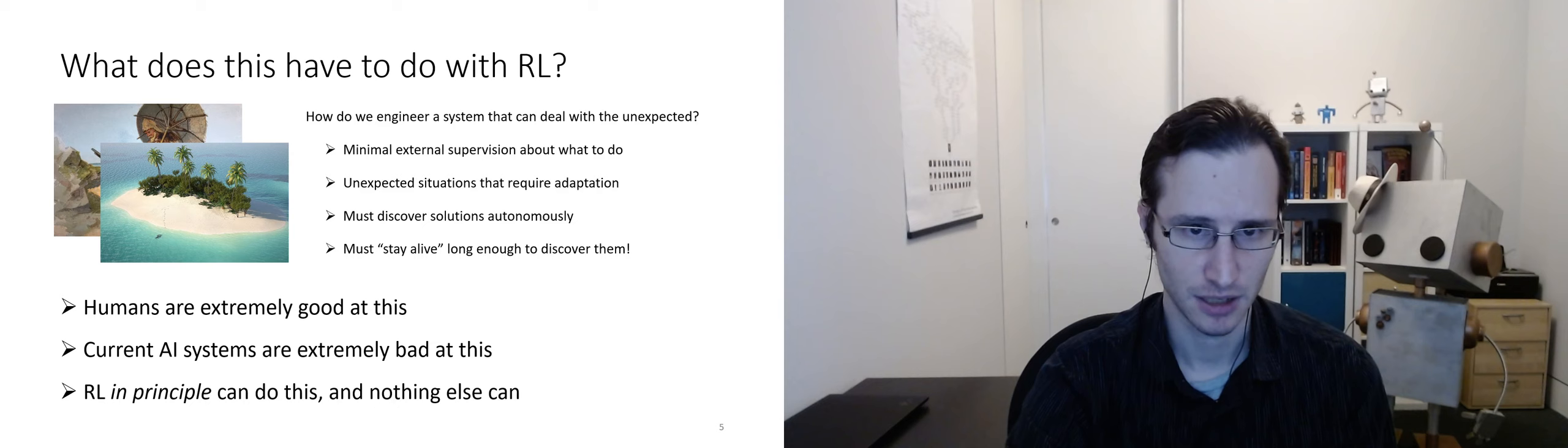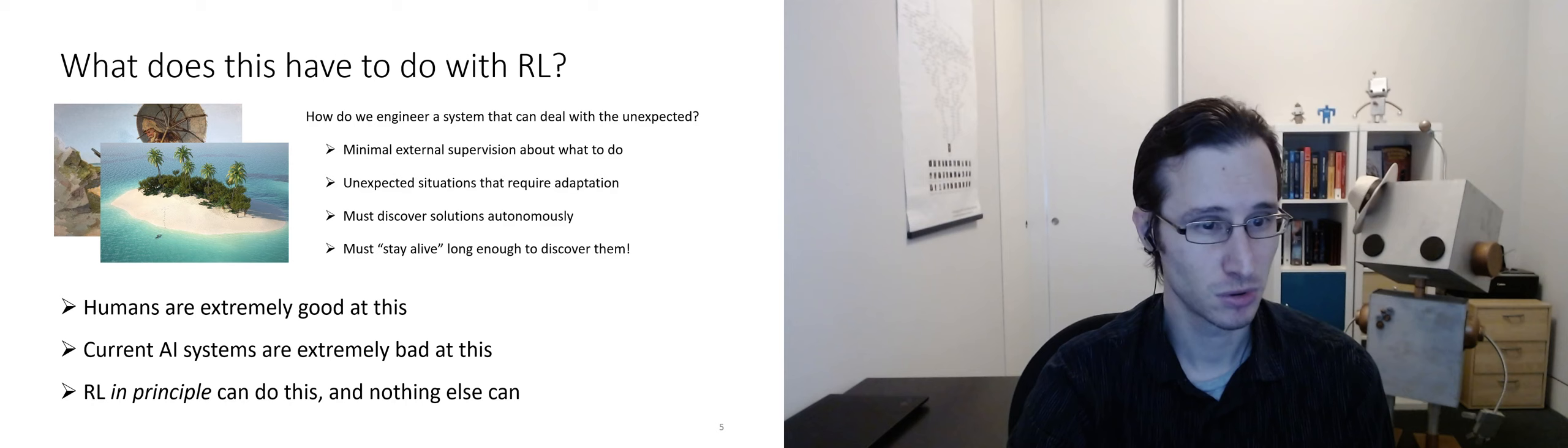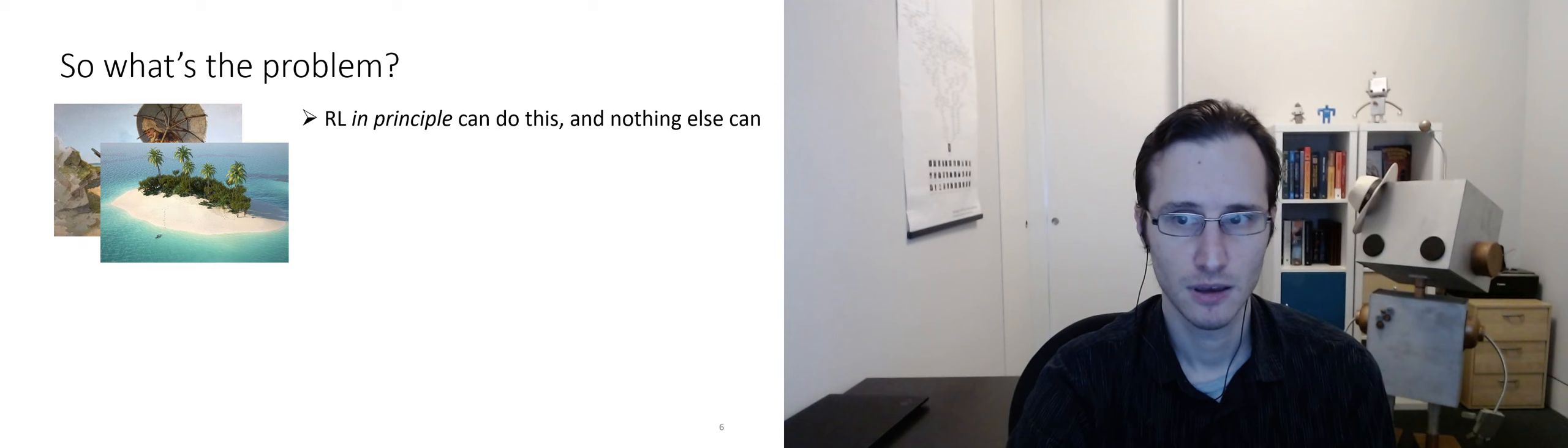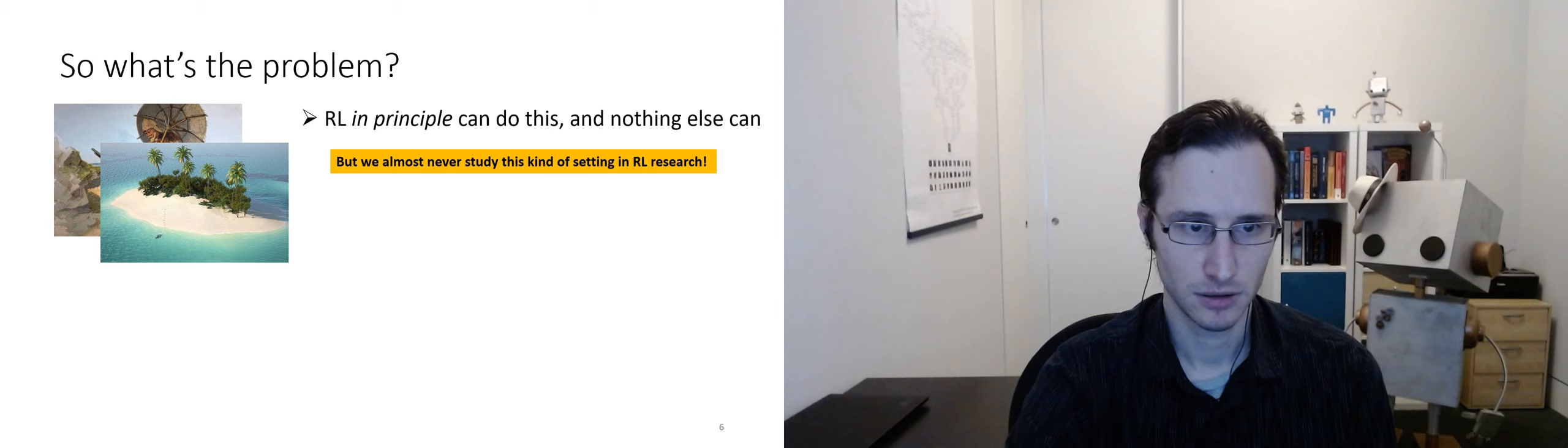RL, in principle, however, can do this. And I would go so far as to claim that basically nothing else can. If you have minimal external supervision about what to do, if you have to deal with unexpected situations, supervised learning won't cut it. You can't engineer a system in advance with hand-designed planning algorithms. You can't simulate those situations. You have to be able to learn and adapt. So what's the problem? If RL, in principle, can do this and nothing else can, why isn't this exactly where RL methods will thrive? The problem is that we almost never study this kind of setting in RL research.